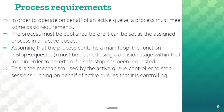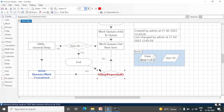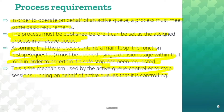In order to operate on behalf of an active queue, a process must meet some basic requirements. The process must be published before it can be set as the assigned process in the active queue — if your process is not published, it will not be available in the assigned processes dropdown. Assuming the process contains a main loop, the function 'request stop' must be queried using a decision stage within that loop. Generally we use this format: get next item, if item ID is empty then stop the process, otherwise process that item, then check if request stop has been issued. If a user has sent a request for stopping the process, then it will stop the process. This is the mechanism used by the active queue controller to stop sessions running on behalf of active queues — no manual intervention is required if you have created a stop request logic in your process.